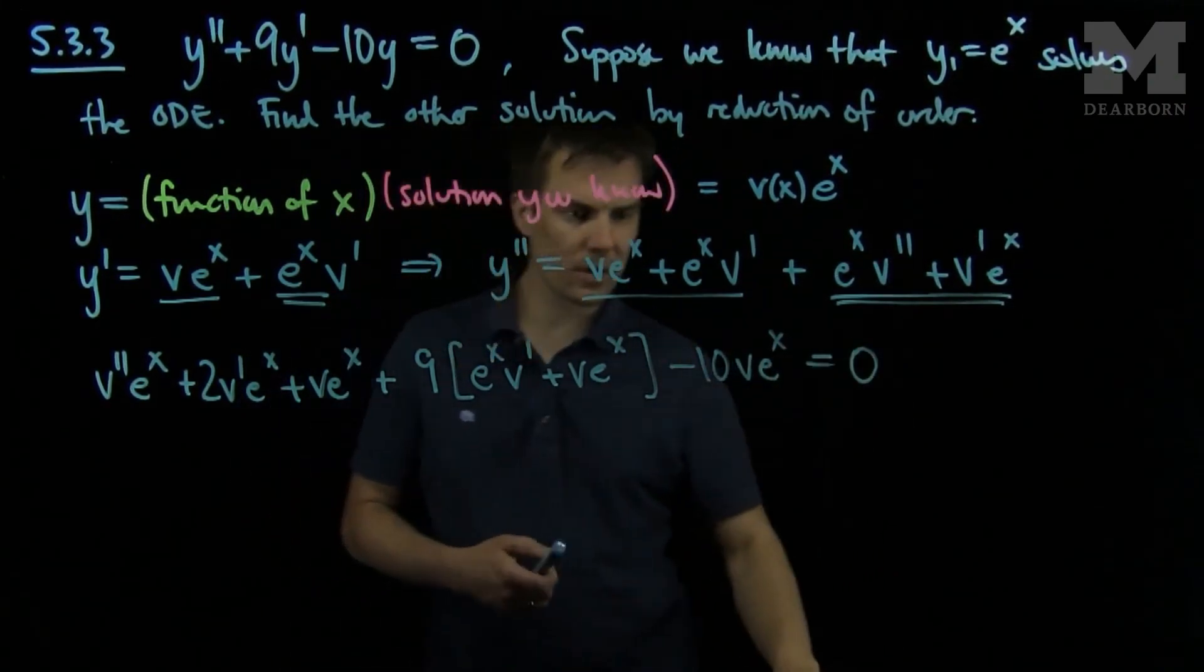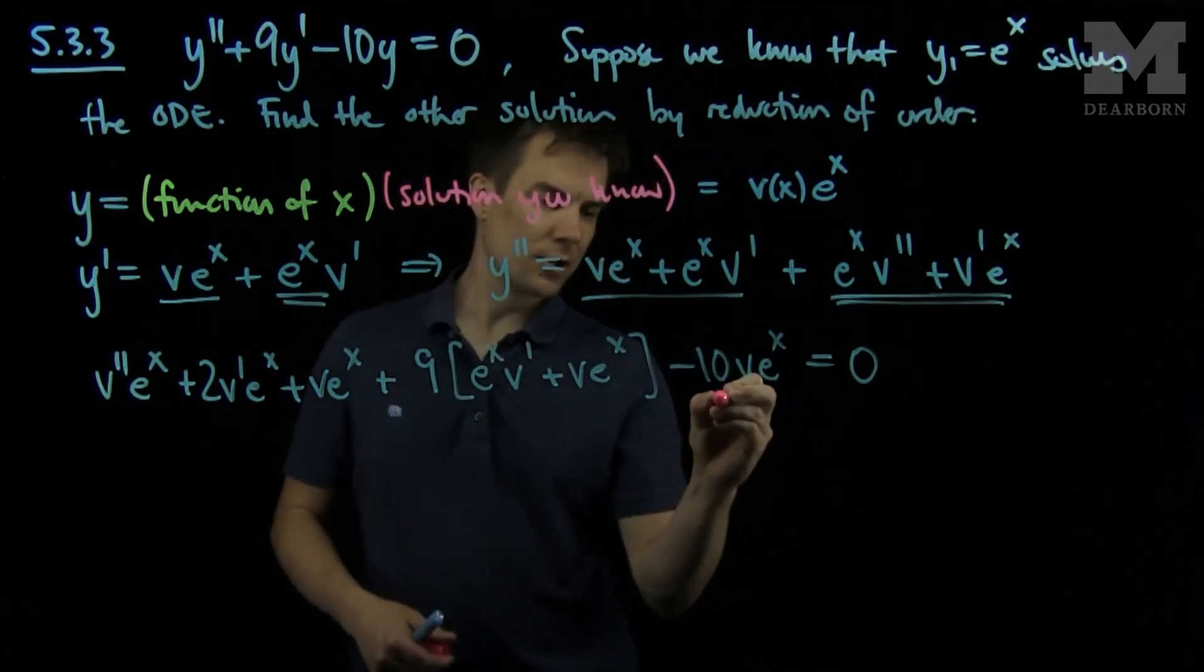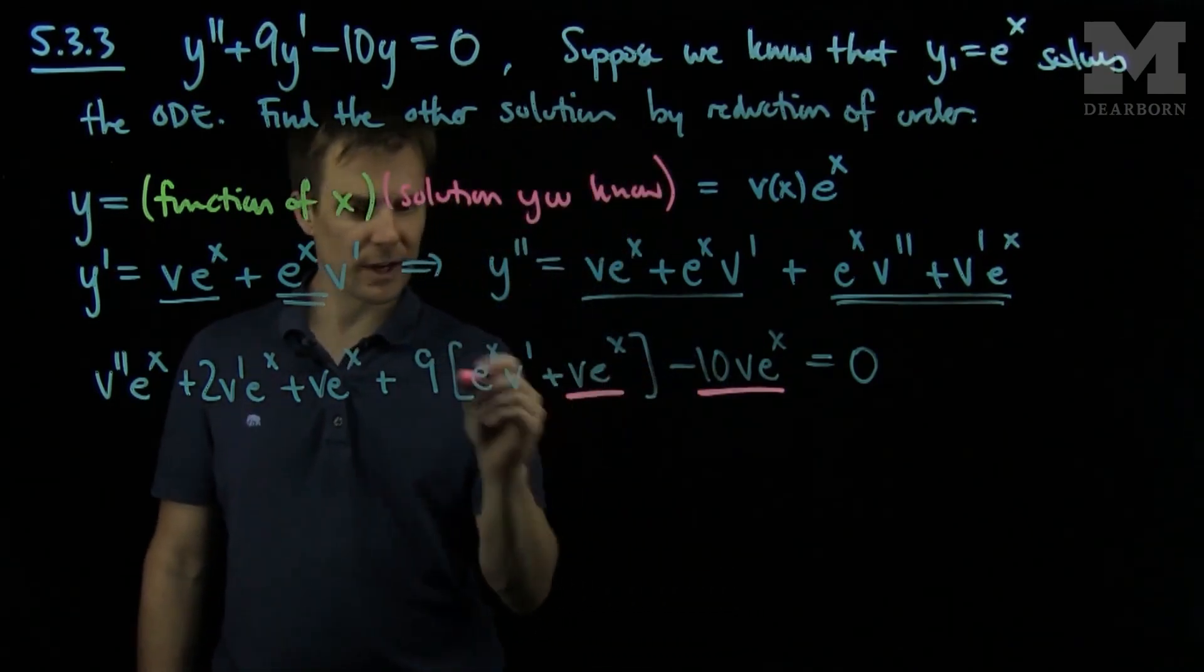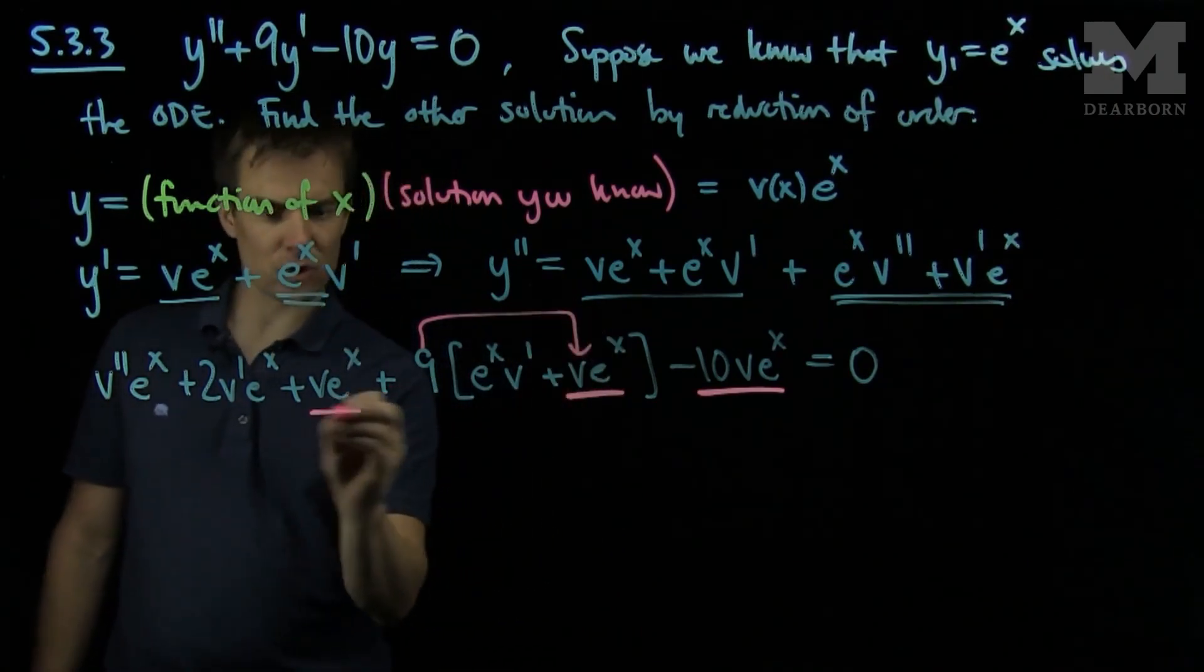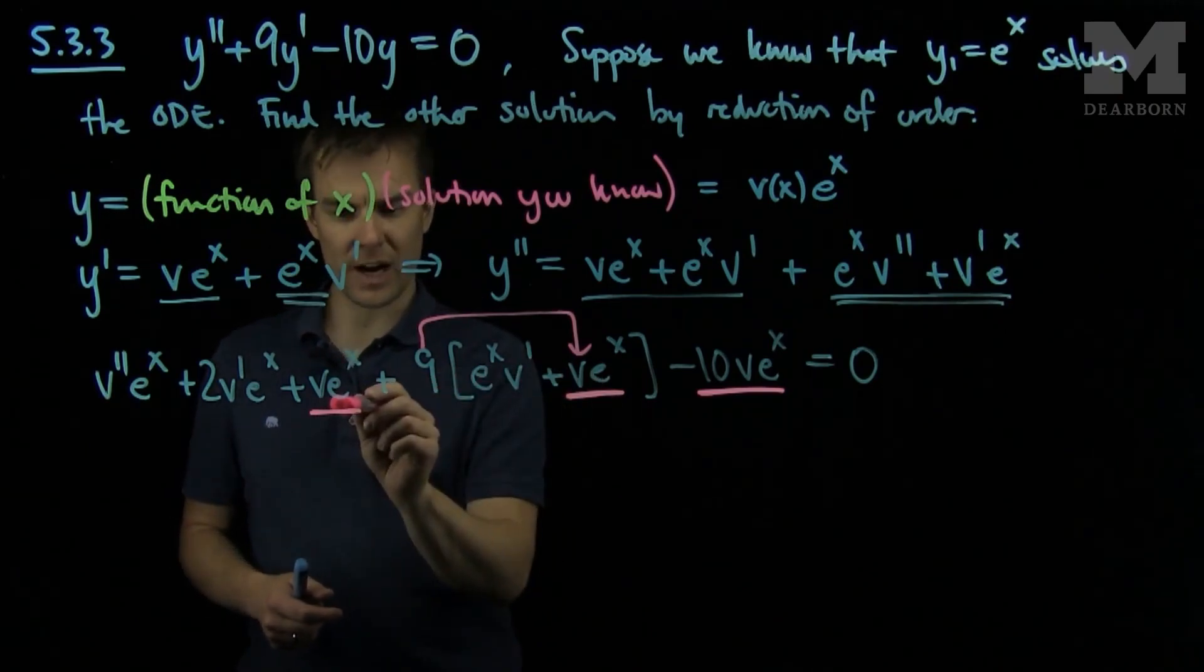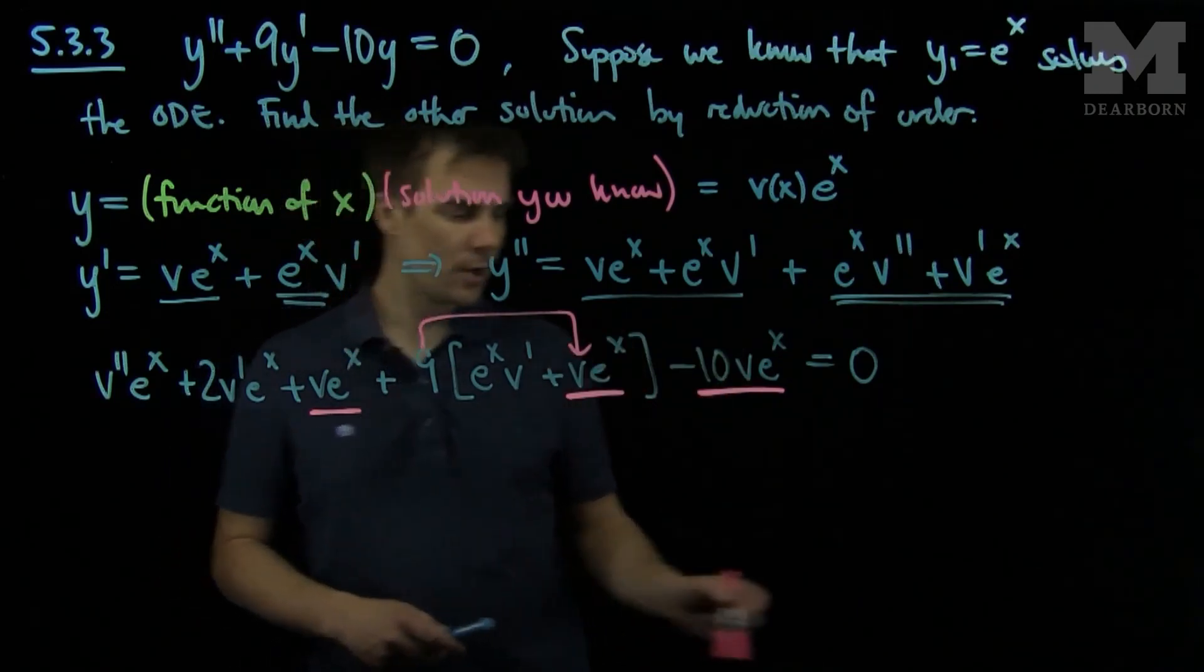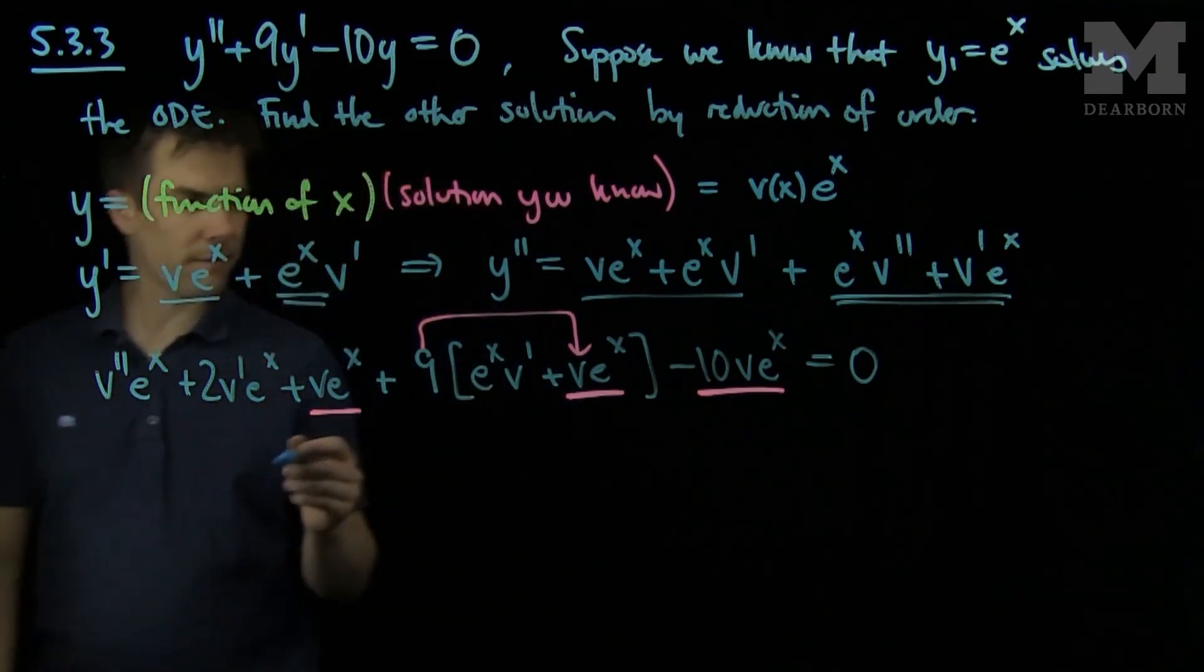Now we observe that when we do a reduction of order the terms that only contain v's should cancel out. So the terms that only contain v is this term, negative 10 v e to the x, then this term will be 9 v e to the x and this will be an ordinary v e to the x. So between these first two terms I have v e to the x and 9 v e to the x, that's 10 v e to the x minus 10 v e to the x will cancel out. So all those terms that are highlighted in pink will cancel out.